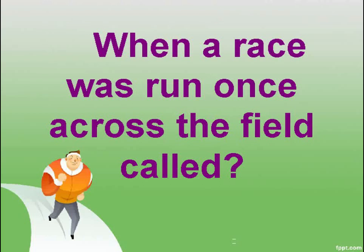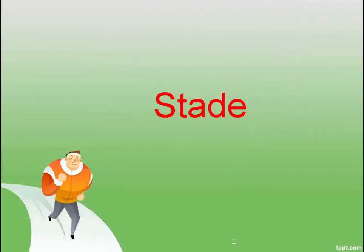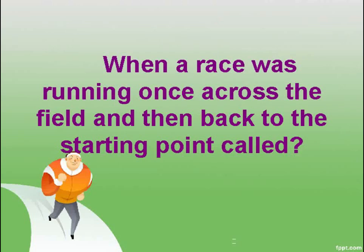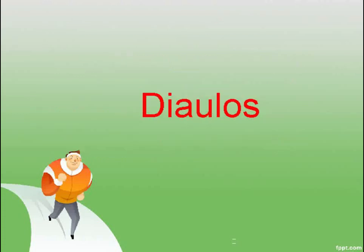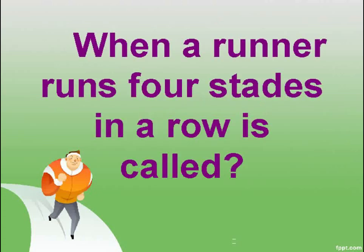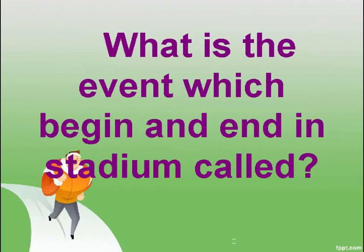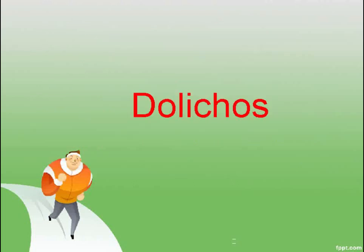When a race was run once across the field, it is called the Stade. When a race was run once across the field and then back to the starting point, it is called the Diaulos. When a runner runs four stades in a row, it is called Hippios. What is the event which begins and ends in the stadium called? Dolichos.